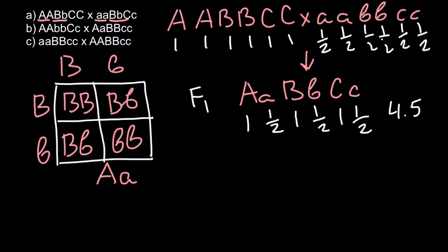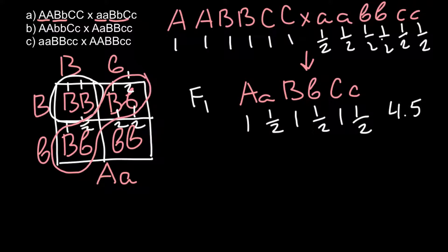For gene B, the Punnett square of two heterozygous parents gives three distinct phenotype classes. The homozygous dominant genotype BB contributes two pounds; the heterozygous genotype Bb contributes one and a half pounds; and the homozygous recessive genotype bb contributes one pound. So the maximum contribution from gene B is two pounds and the minimum is one pound — two variants are possible: capital B capital B and small b small b.